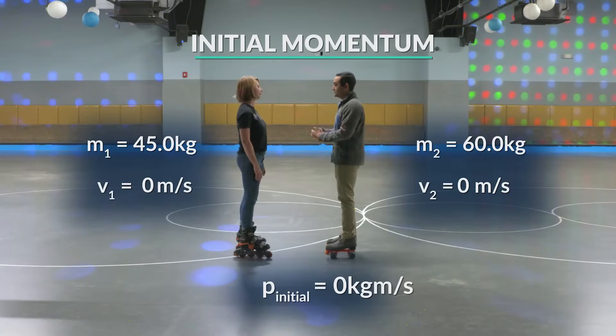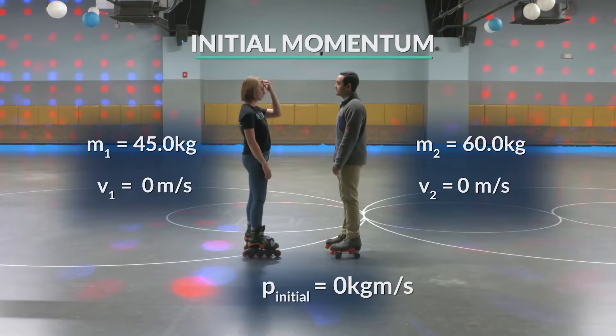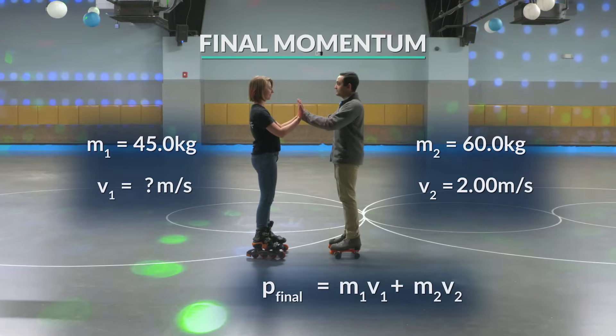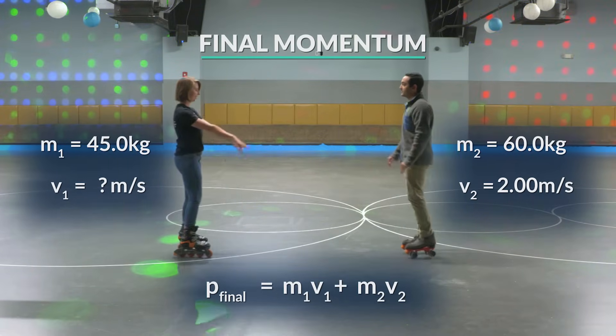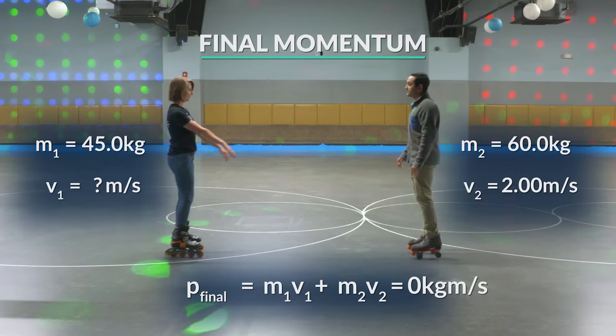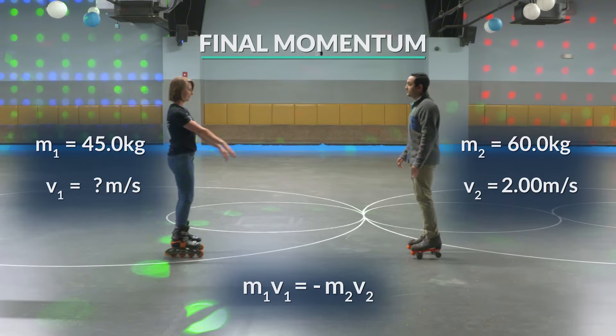Turag is moving in one direction at a speed of 2.00 meters per second. What is Summer's speed and direction? We're doing this mathematically, remember. First, we establish their initial momentum. That would be zero because they're at rest. The final momentum of the system will be the sum of the momentum values for Summer and Turag, which are equal to their mass times their final velocity. If the total initial momentum of the system is zero, the total final momentum of the system must also be zero. So we know that Turag and Summer must have equal and opposite momenta.